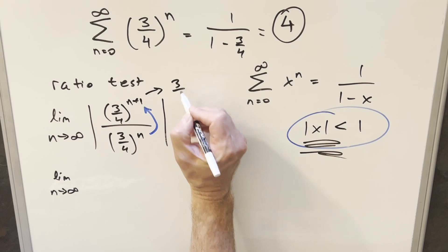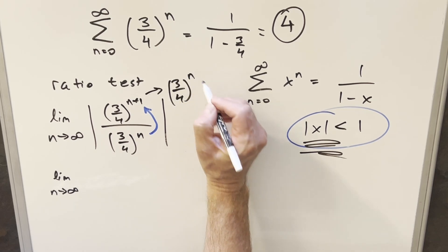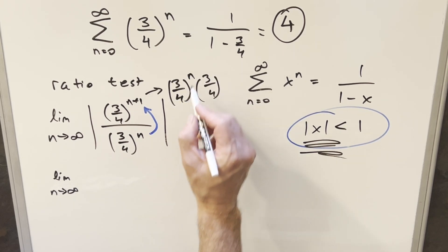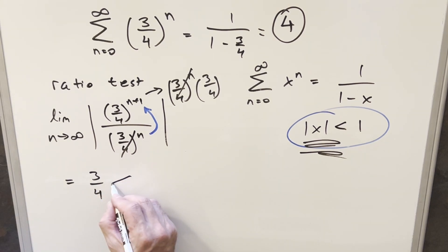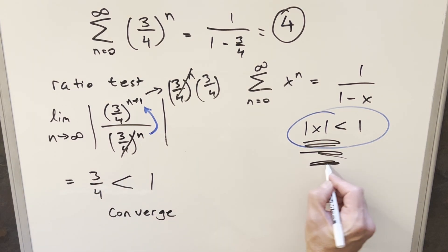3 fourths to the n plus 1, I can write this as 3 fourths to the n times 3 fourths. So then this is actually going to cancel with this. I don't think I need to evaluate another limit because we're just evaluating a constant value. This is just going to be 3 fourths. Again, we have the same comparison as we had with the root test. We're just comparing this to 1. 3 fourths is less than 1, so this is going to converge. Same exact scenario where if it's greater than 1 it diverges. If it's 1,